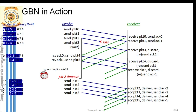At the sender side, a window is maintained — you can see this blue color sliding window. The window contains packets 0, 1, 2, 3, 4, and 5. Since we are transmitting four packets, the window size should always equal the total number of packets transmitted. So the window size is equal to four, meaning inside the window there can be only four packets.